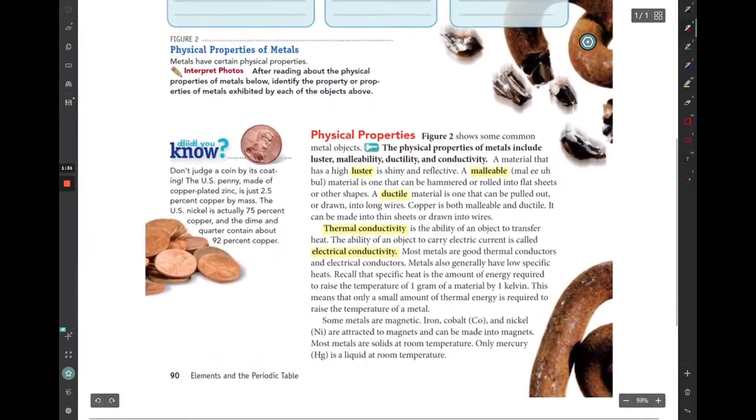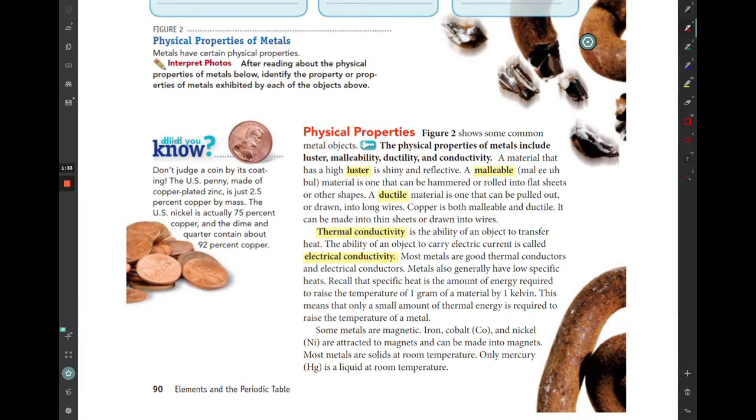Let's first look at the physical properties of metals. The first one we're going to look at is luster. Luster just basically means that it is shiny and reflective. So when you think about a metal, you typically think of something that is shiny and highly reflective. And that is what luster refers to.